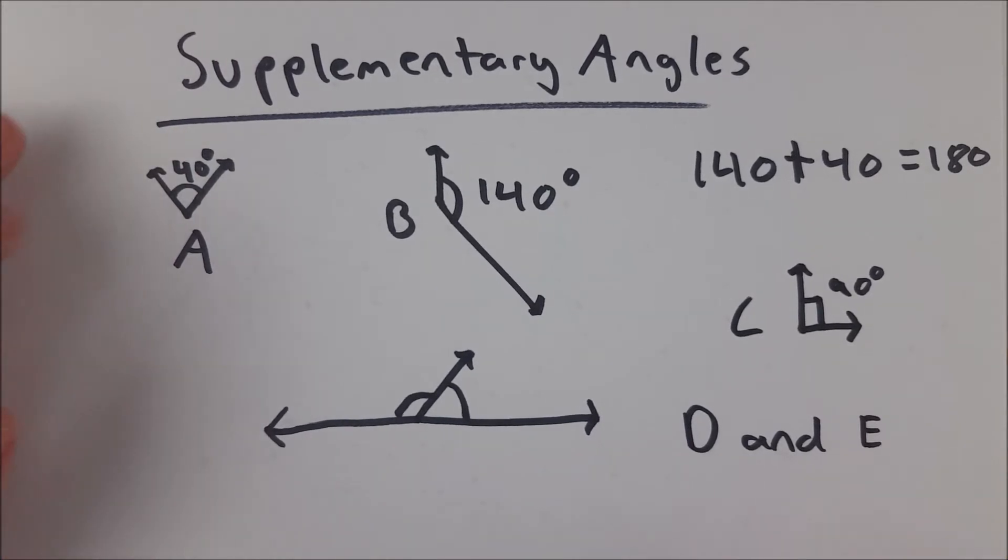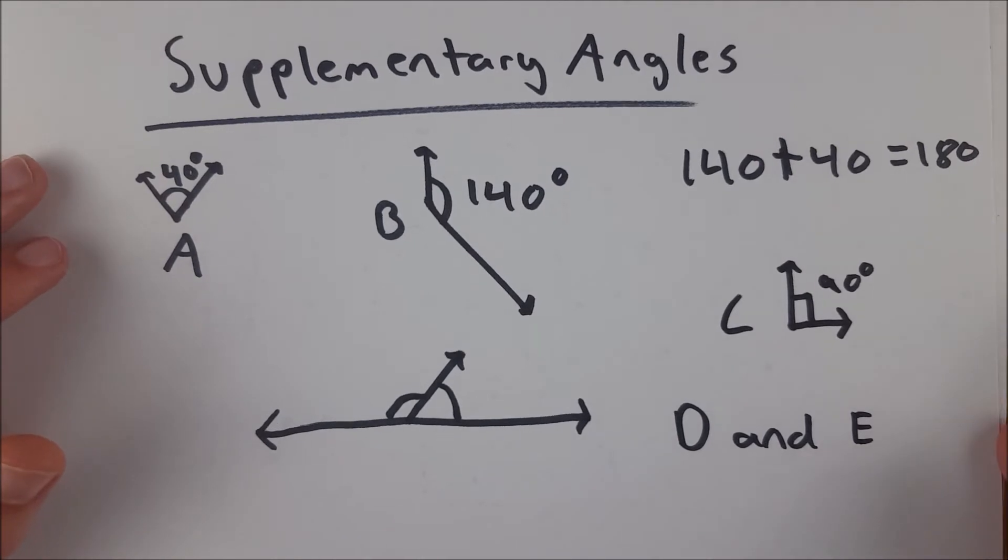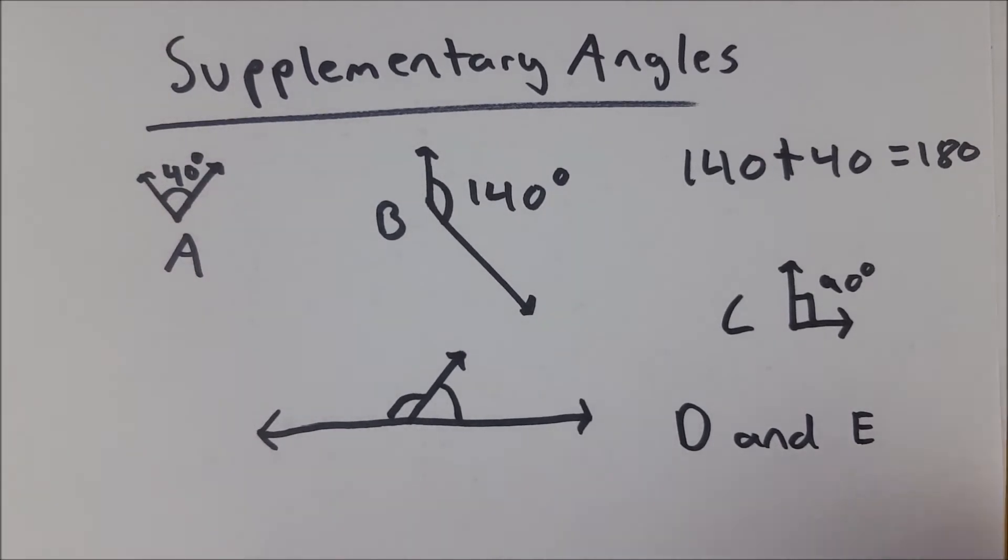Which brings me to one more fun property: if two angles are both congruent and supplementary to each other, that is, they have the same measure as each other and they add up to 180 degrees, then both angles must be right angles, and thus have a measure of 90 degrees.